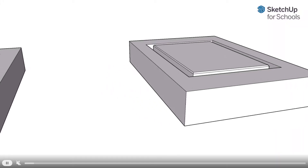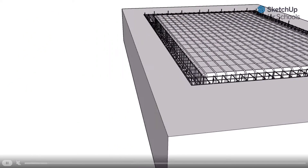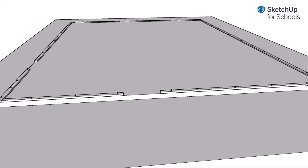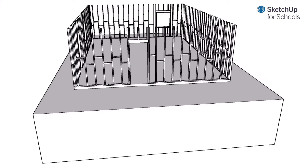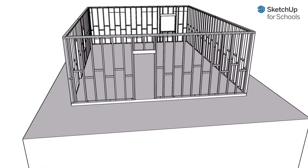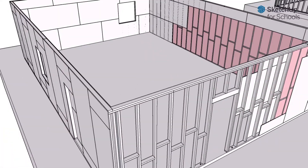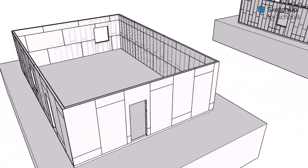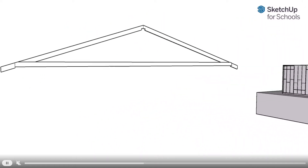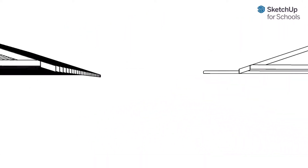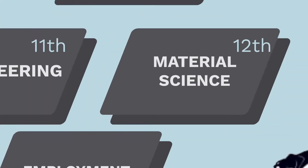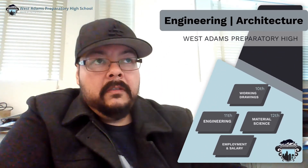Next, we'll jump into the engineering class. In engineering, we design different structures. This semester, we did a bridge. Here you can see there's a virtual walkthrough of the bridge. We had to understand the size of the bridge — we actually replaced the bridge in Pasadena, and I did get the plans from the city. We did case studies on the bridge barriers to make sure that cars and people don't go over the edge and that everything is safe.